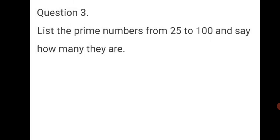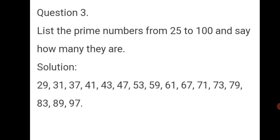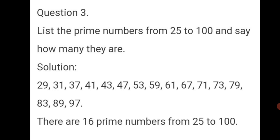Question 3: list the prime numbers from 25 to 100 and say how many they are. The prime numbers from 25 to 100 are: 29, 31, 37, 41, 43, 47, 53, 59, 61, 67, 71, 73, 79, 83, 89, 97. You can write numbers from 25 to 100 and use the test of divisibility to cut down composite numbers — the remaining ones are your prime numbers. There are 16 prime numbers from 25 to 100.